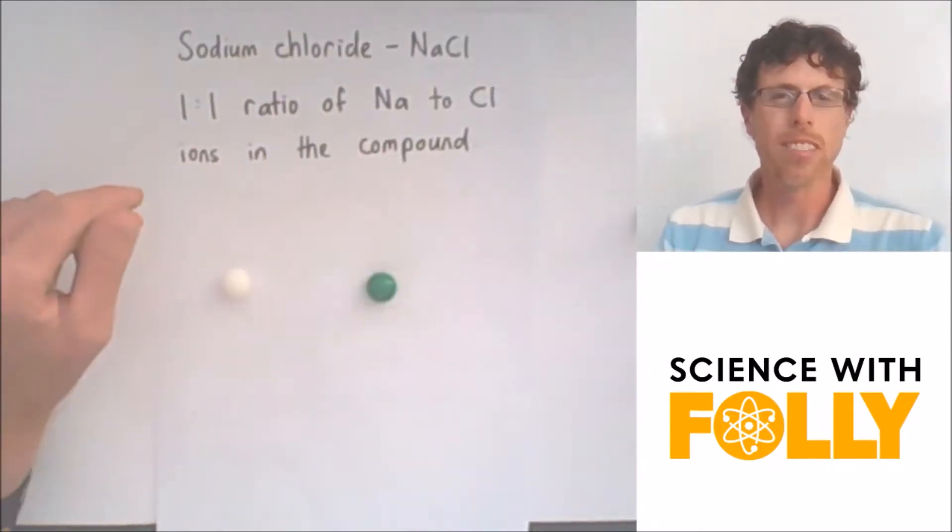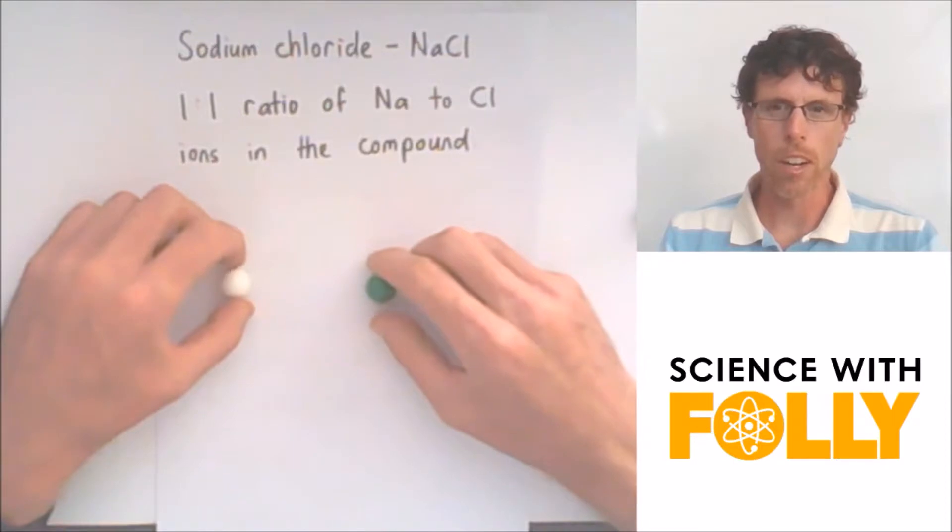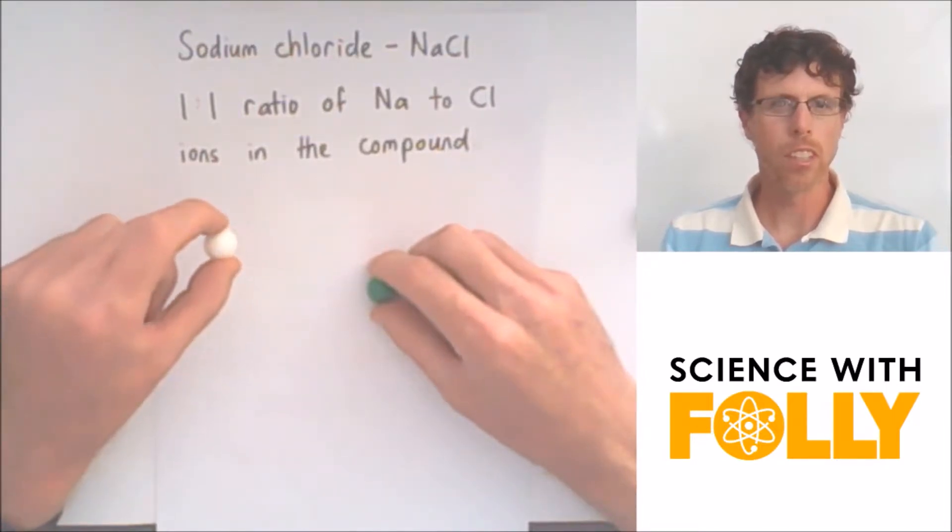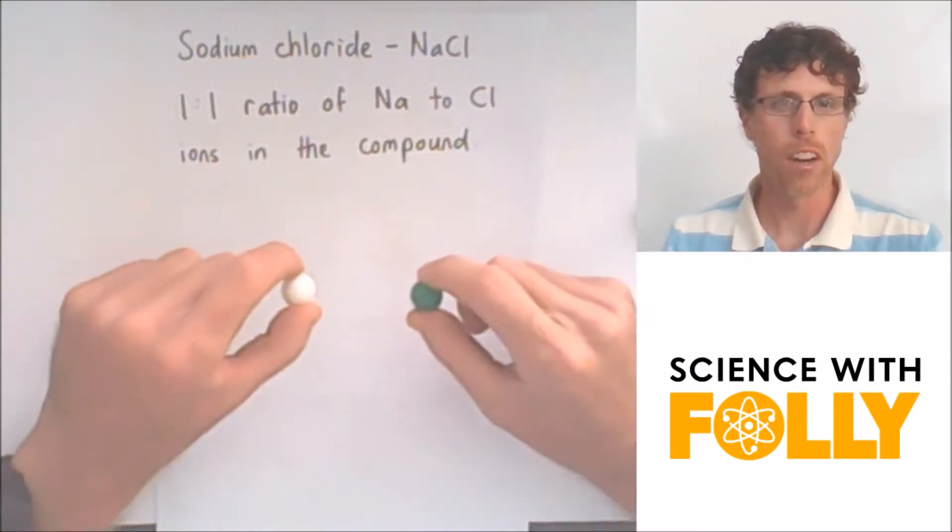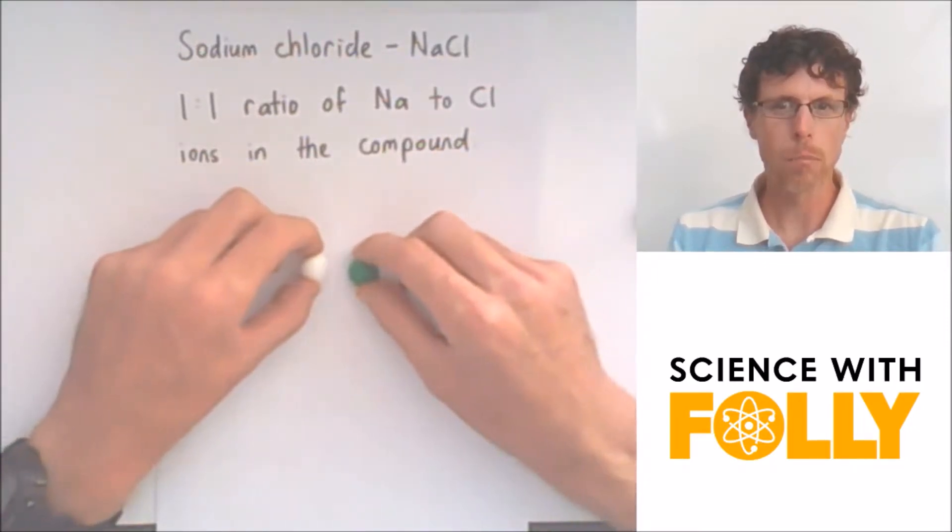So let's use the example of sodium chloride, NaCl. Sodium chloride has got a one-to-one ratio of sodium to chloride ions in a compound. And remember, the opposite charges pull them together.